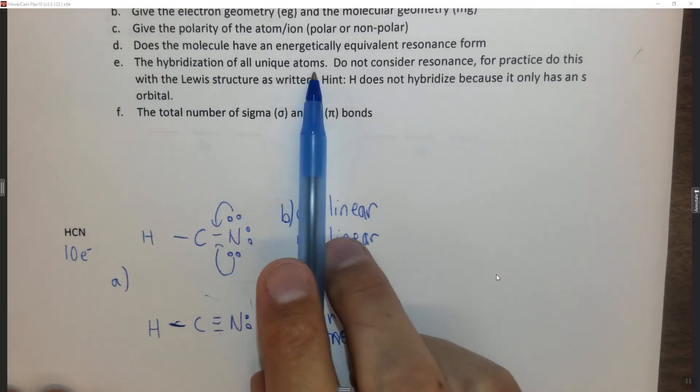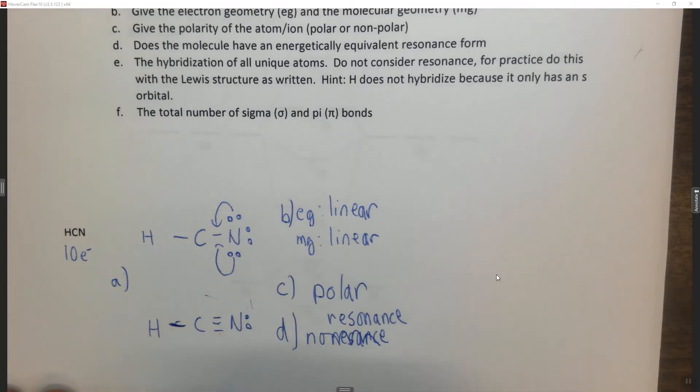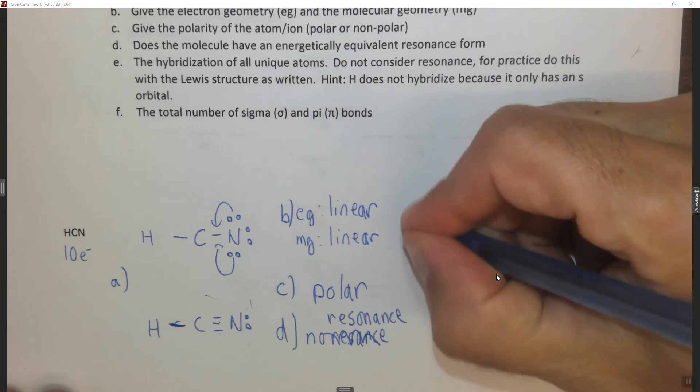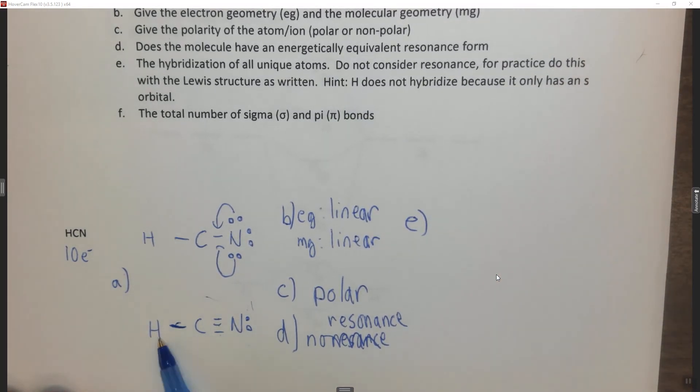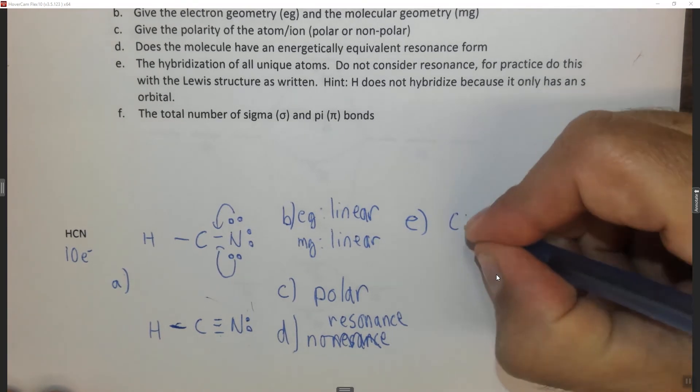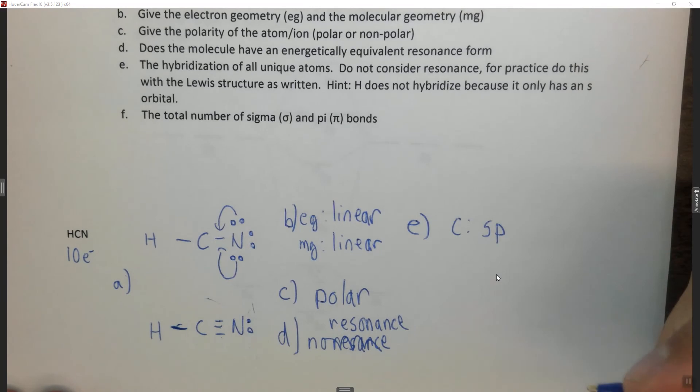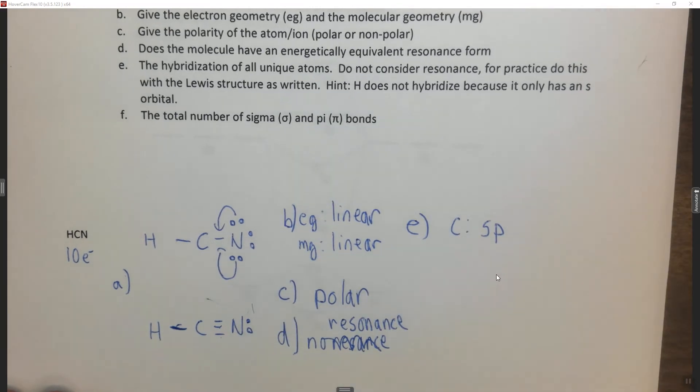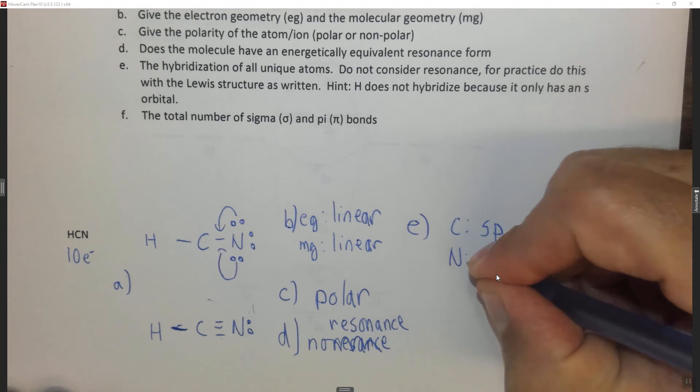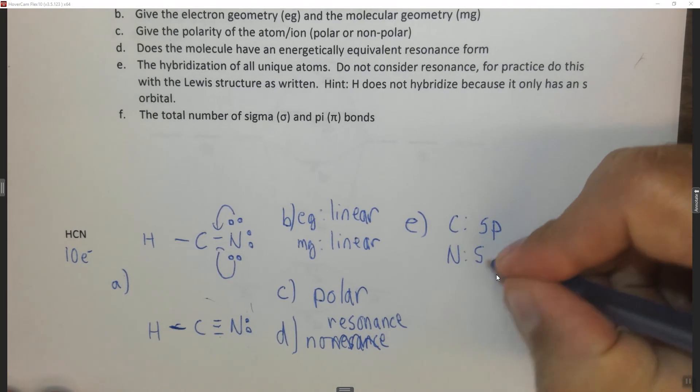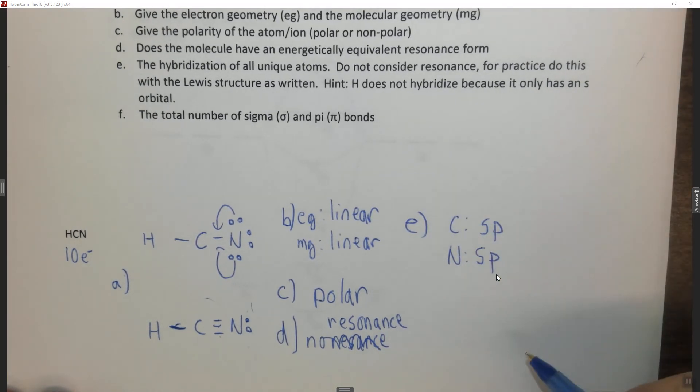Alright, so let's look at the next one. The hybridization of all unique atoms, based on what you have drawn. So if we look here, hydrogen doesn't hybridize because it just has an s orbital. Let's look at carbon. Carbon has one, two domains, so two domains means that carbon is sp hybridized. Nitrogen has one, two domains, so nitrogen is also sp hybridized.